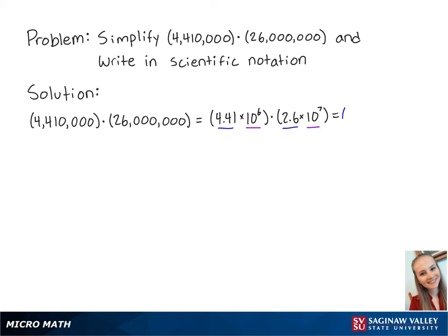So this equals 4.41 times 2.6 times 10 to the 6th times 10 to the 7th. 4.41 times 2.6 is equal to 11.466, and using our exponent rules,